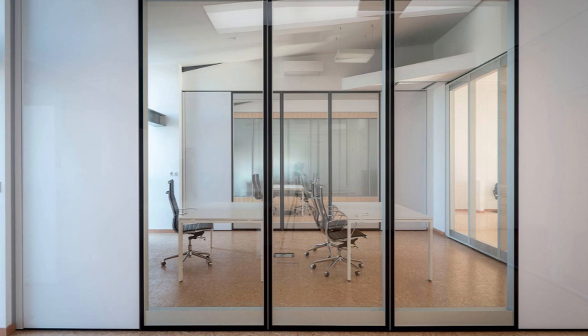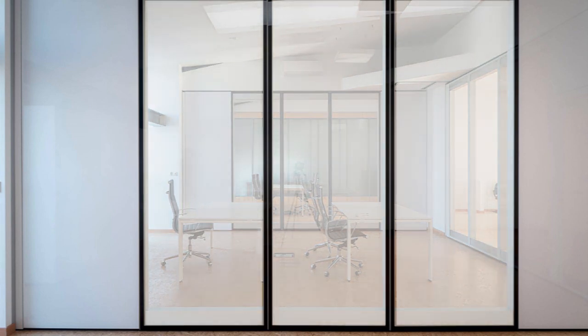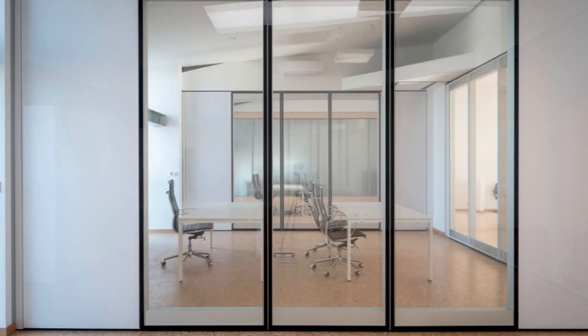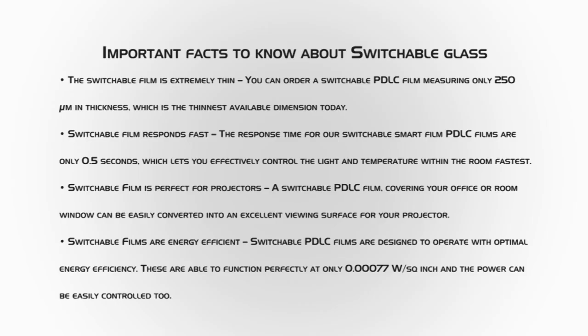Once the smart film is switched on, the electric current traveling between the two electrode PET sheets passes through the polymer liquid crystal solution. This electric current aligns the randomly positioned crystal molecules suspended in the polymer, and they attain a uniform position relative to each other. In this situation, the film turns completely transparent and allows total light to come through. To return the switchable smart film to privacy mode, you can simply switch off the flow of electric current.